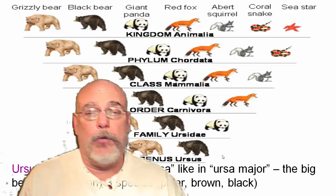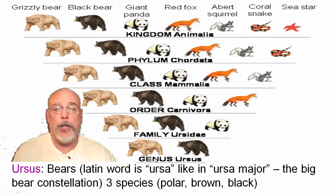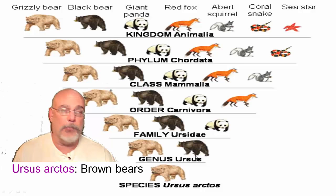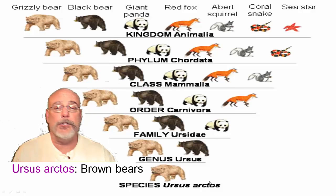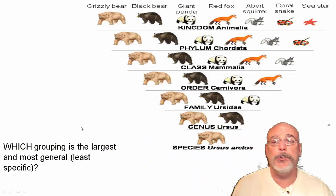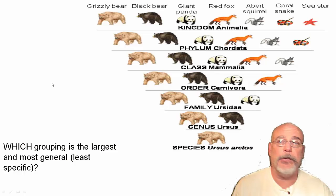Here's a picture of Ursa Major — you probably recognize the Big Dipper within it. That asterism is actually part of the constellation Ursa Major: 'ursa' meaning bear, 'major' meaning big — the big bear. So at the genus level we have polar bears, brown bears, and black bears. Finally, we can separate down to the species level. The brown bear is separated from the black bear and polar bear, and its scientific name is Ursus arctos, which means brown bear.